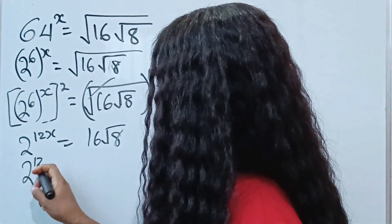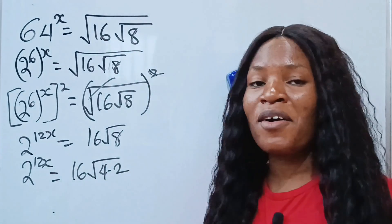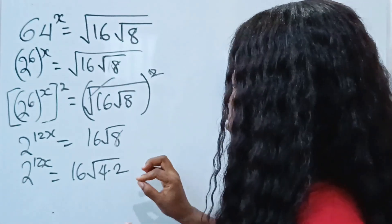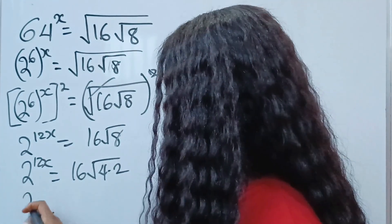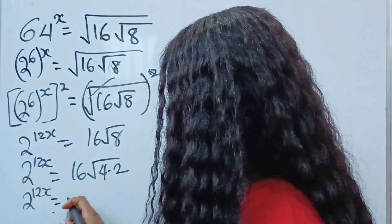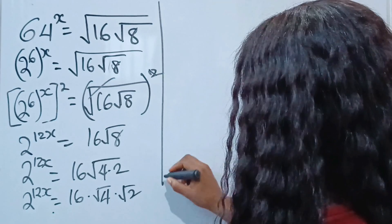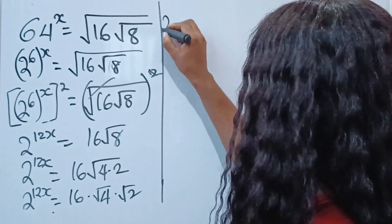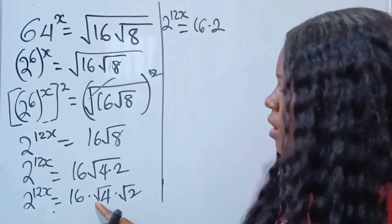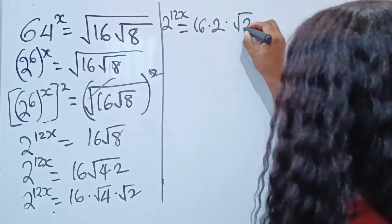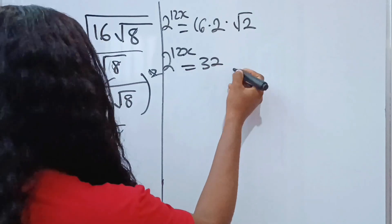So we have 2 to the power of 12x is equal to 16 times the square root of 4 multiplied by 2. We can write this as 2 to the power of 12x is equal to 16 multiplied by root 4 multiplied by root 2. Now, square root of 4 gives us 2, then multiplied by root 2.